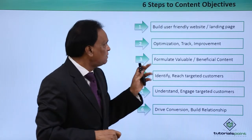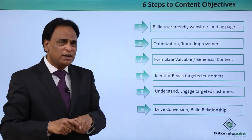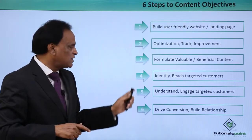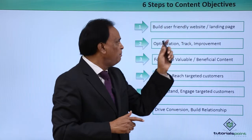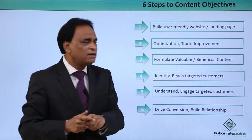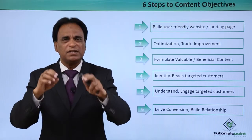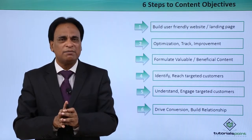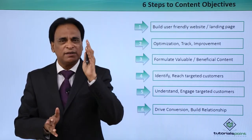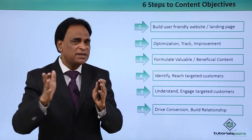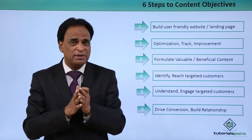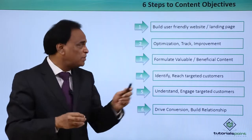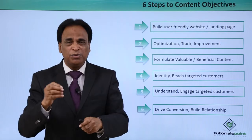There are certain steps you need to implement as far as your objectives are concerned — there are 6 steps outlined here. Number one is build a user-friendly website and landing page. The first and foremost point when you think of doing content marketing is to have a website that is responsive, a landing page that is responsive, and completely optimized with tracking and improvement.